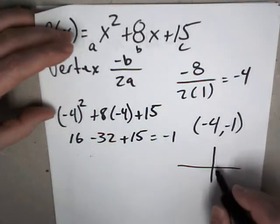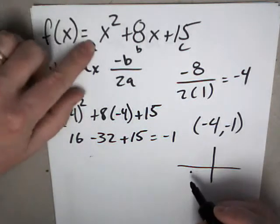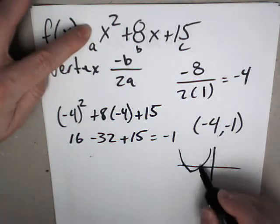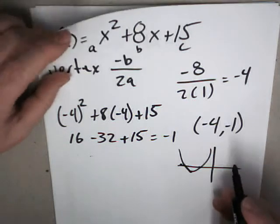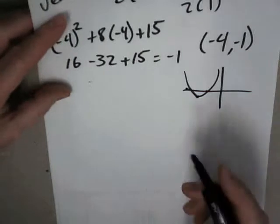So now if I graph it, back 4, down 1. And since this is a positive value on x squared, it opens up. So you're going to wind up with two intercepts. So with two intercepts, we take this and set it equal to 0.